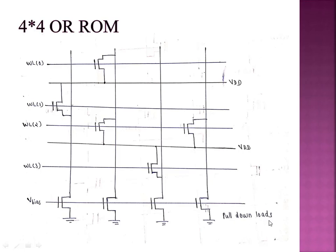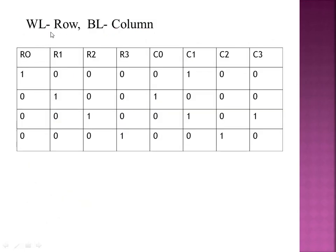When we enable the first wordline, we check each column for the presence or absence of a transistor. The presence or absence of a transistor in each cell along that row determines the data output. We organize this as a table: row 0, row 1, row 2, row 3 against column 0, column 1, column 2, column 3.